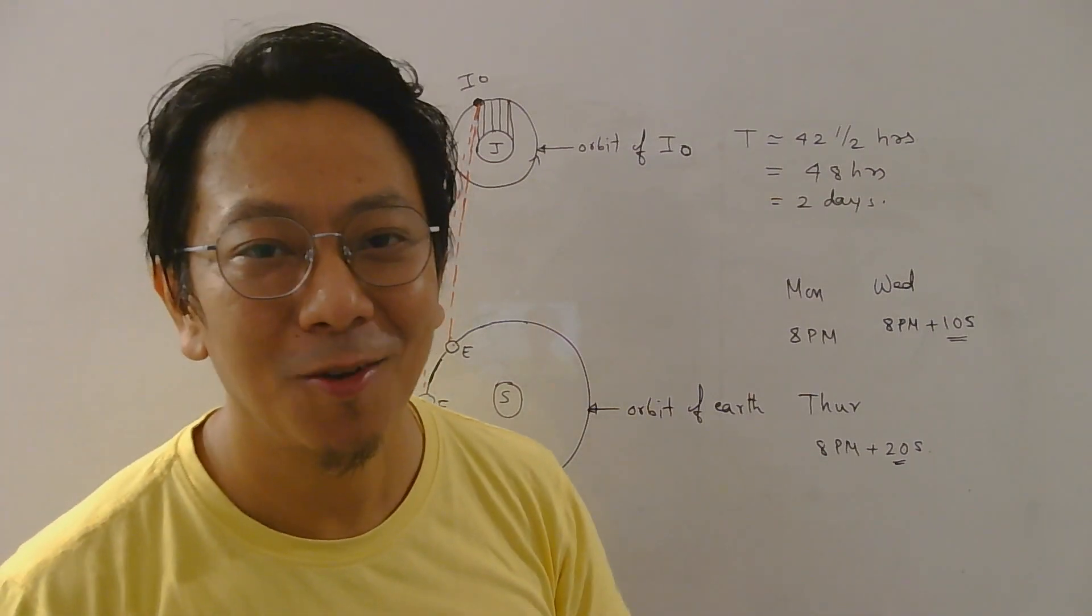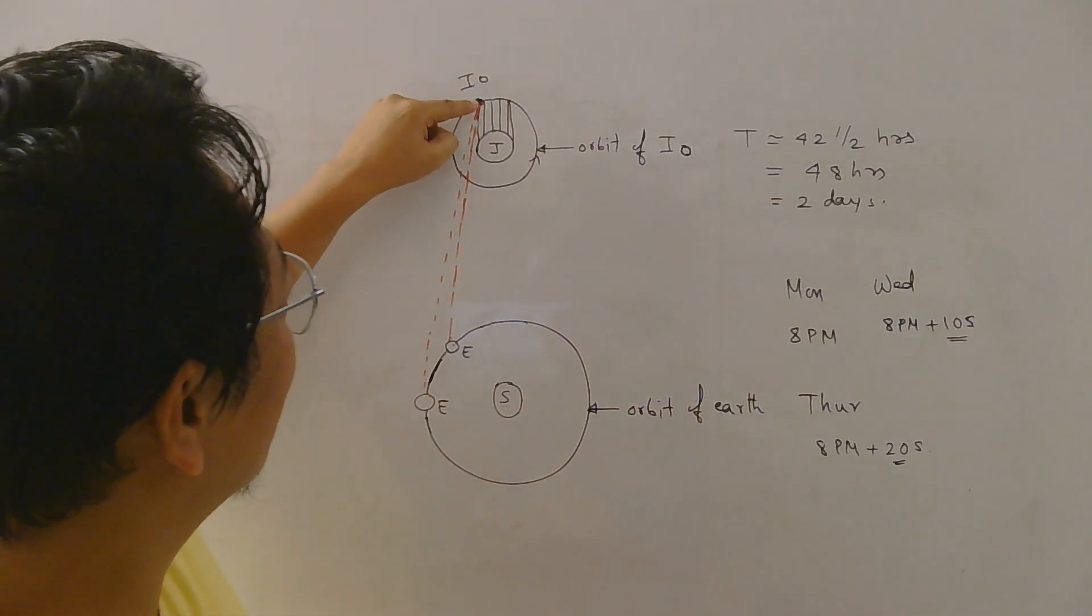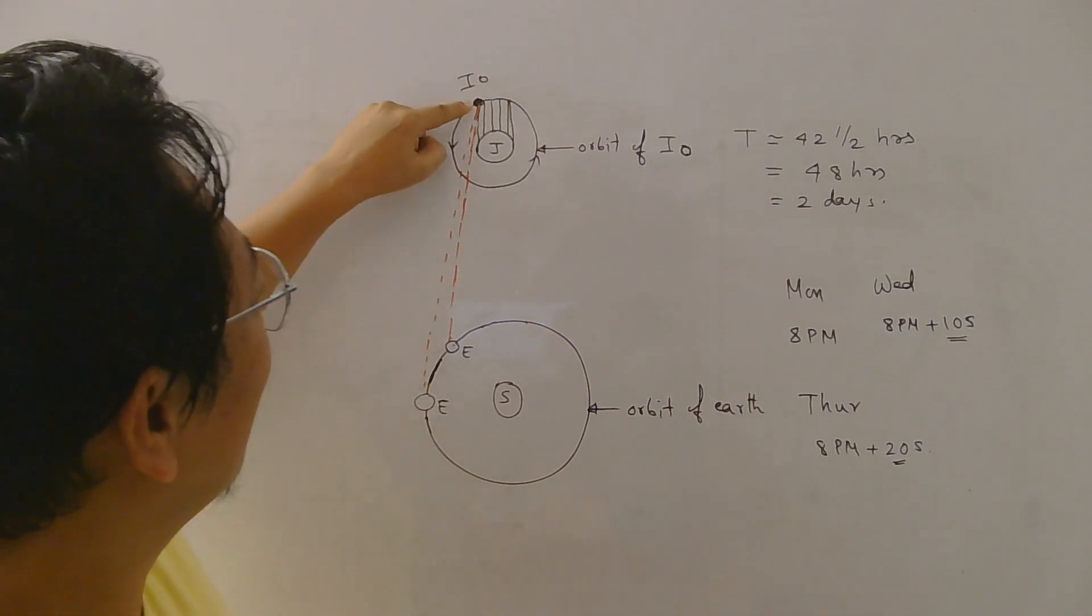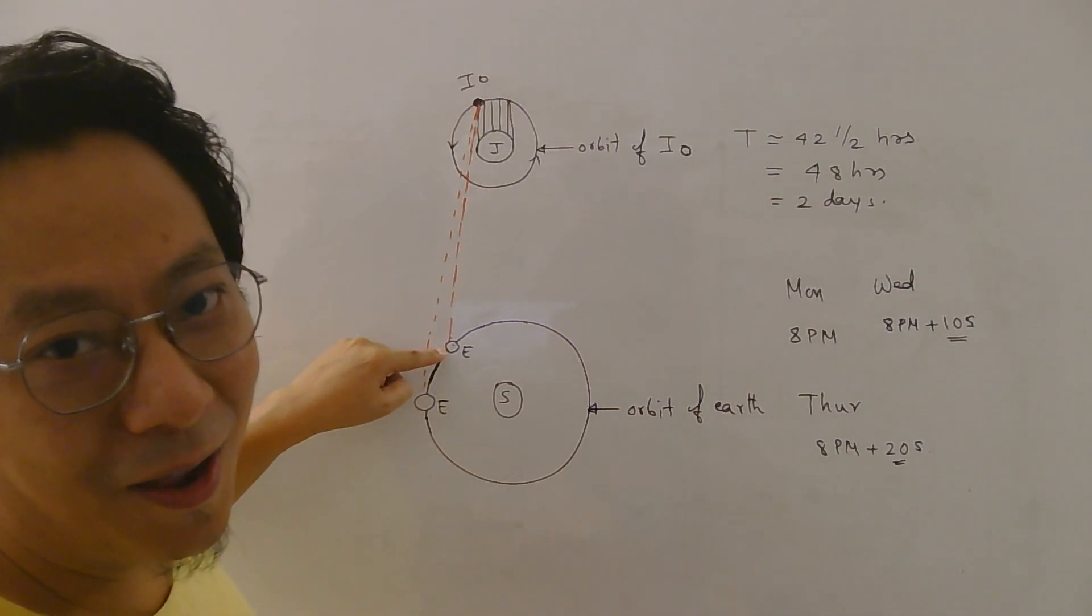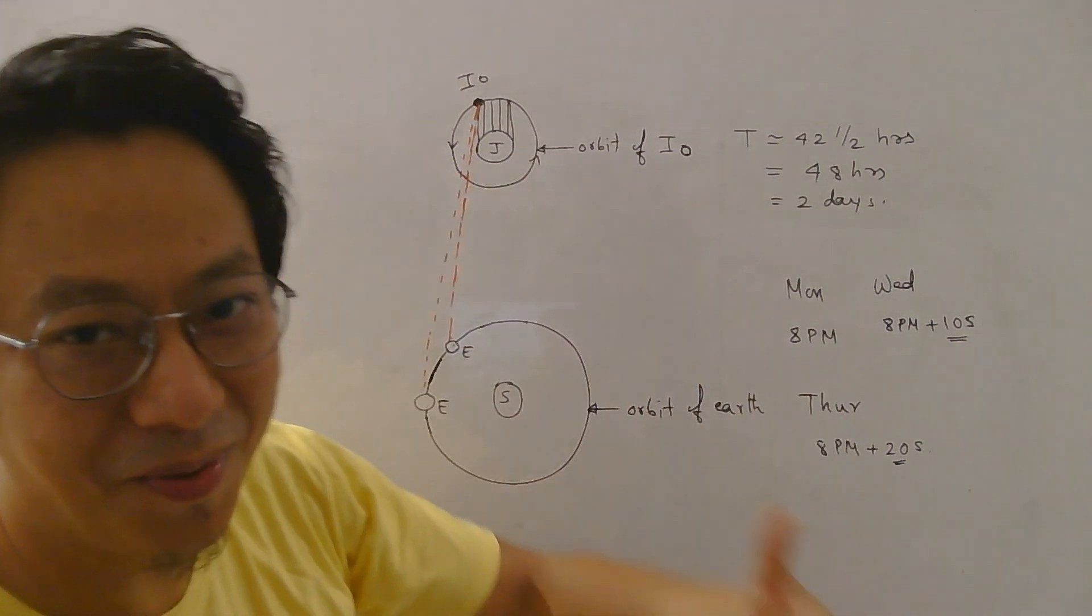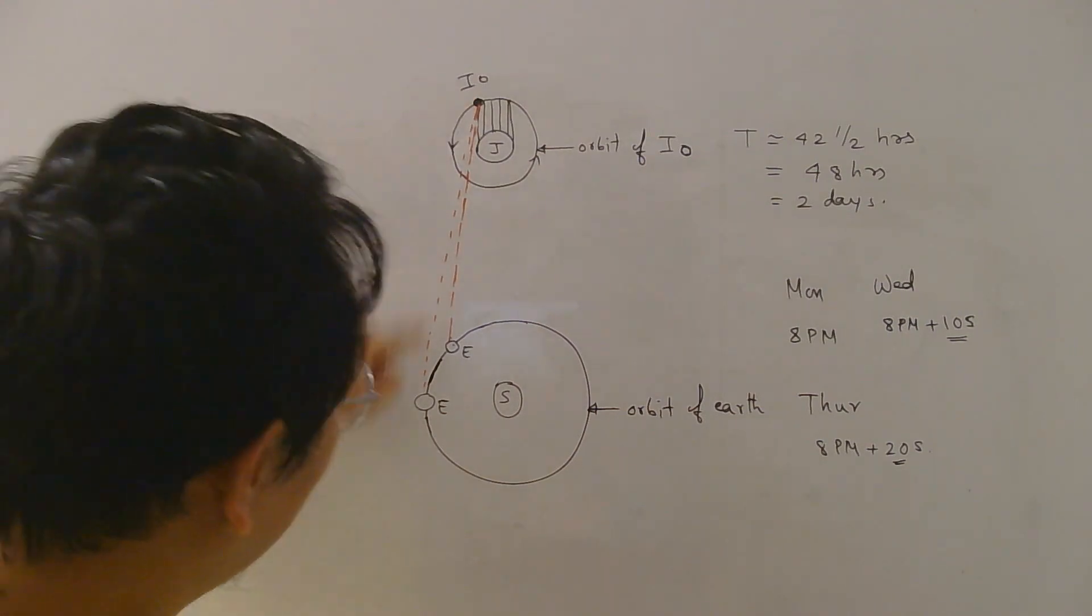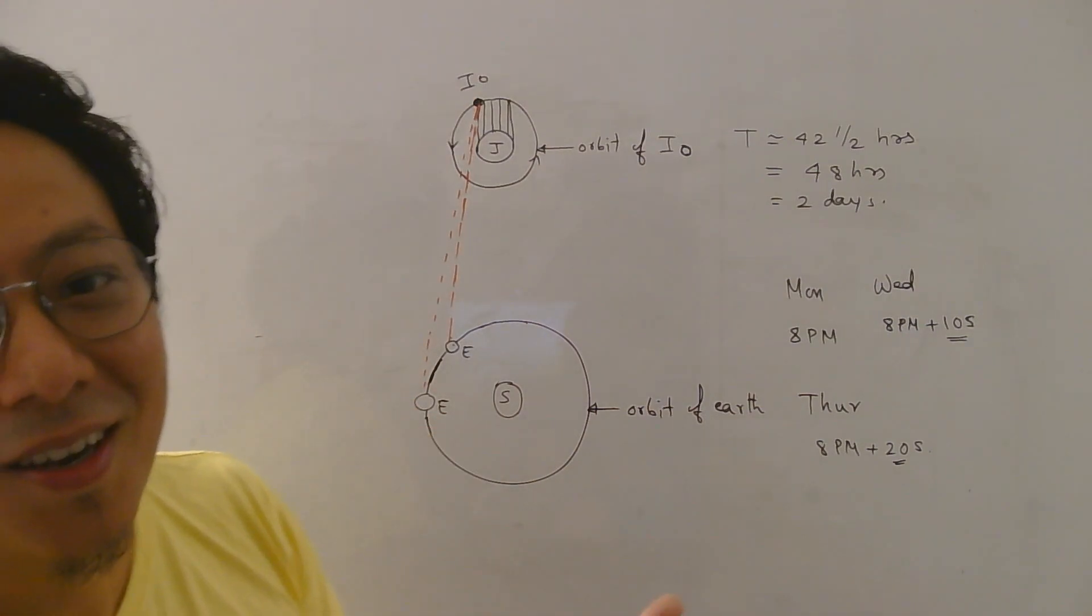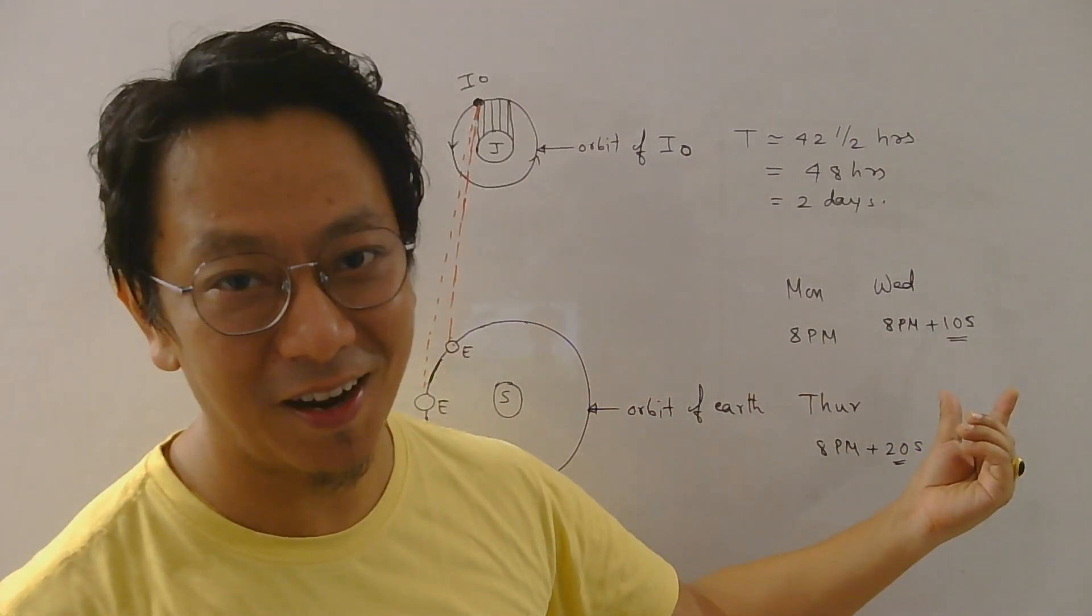Now why this delay was happening? Well at that moment it was not clear because at that moment they thought light travels instantly. So 8 PM when Io is here you will see Io at 8 PM, and after 2 days time when again 8 PM comes when Io will be here back, again it will reach instantly so you should see the second moon rise again at 8 PM. But there was a delay of 10 seconds.